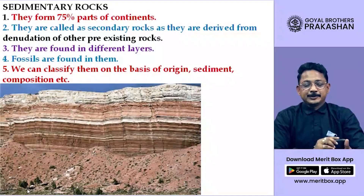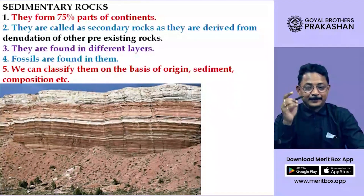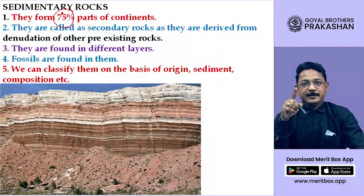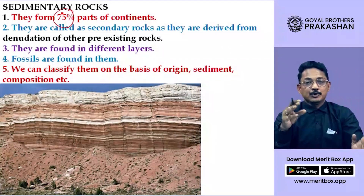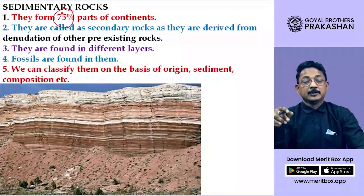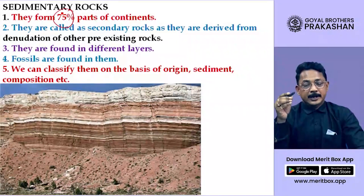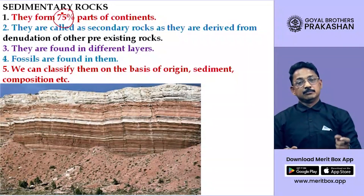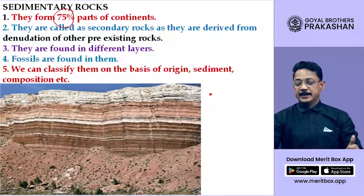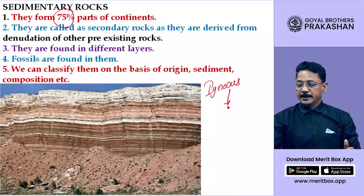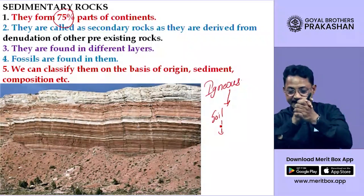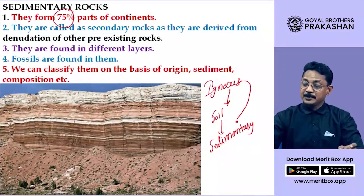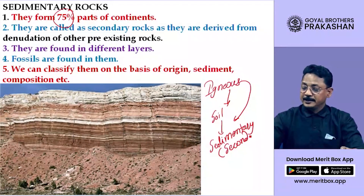A few interesting characteristics of sedimentary rocks: 75 percent of continents are made up of sedimentary rocks, so they are the most abundant rocks on the surface of continents. A river flows, carries soil, that soil gets compacted and a rock is formed. Soil is formed from the first rock called igneous rock. Igneous rocks break down to form soil, soil gets compacted to form sedimentary rock.